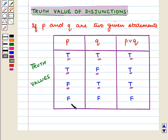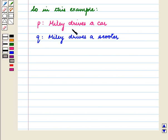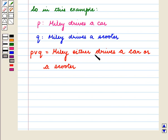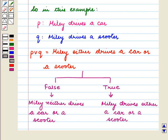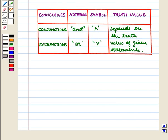And if both P and Q statements are false, then their disjunction P ∨ Q is false. In the example, P: 'Miley drives a car' and Q: 'Miley drives a scooter.' P ∨ Q — 'Miley either drives a car or a scooter' — is false if Miley drives neither, and true if Miley drives either a car or a scooter. In this session we have discussed connectives, their symbolic notation, and their truth values. This completes our session.